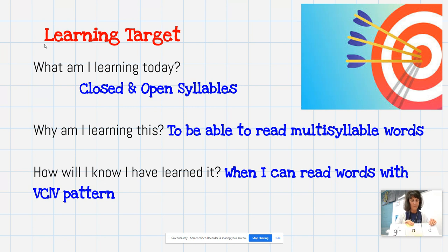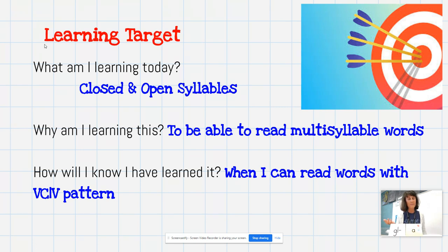This says "glad" — closed syllable. Find my vowel, look behind it, closed syllable, short vowel sound, "glad." I take it away, what does it say? "Glay." Let's do another one. "Play." Now it's not how we spell it, but it is an open syllable — "play."